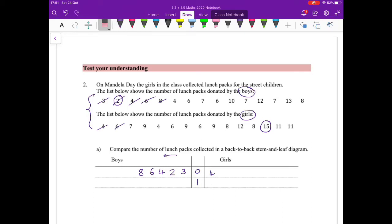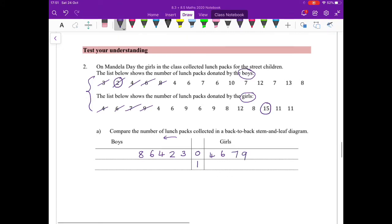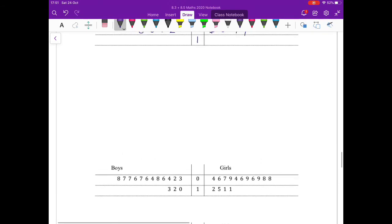6 - sorry, wrong column, not 16 - 6, 7, 9, 7, 9, and you continue in this way. That is what your table would look like.